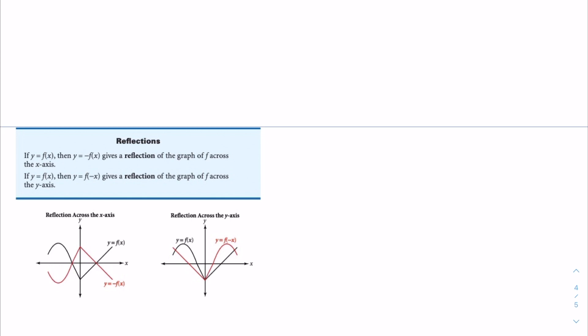The graphs show that for the first graph it is a reflection across the x-axis. It is easier to see if you draw a line through the x-axis — the reflections act as a mirror, mirroring the graph across. For the y-axis you can do the same thing and draw a line through the y-axis, which makes it easier to see that the original graph is being mirrored across the y-axis.